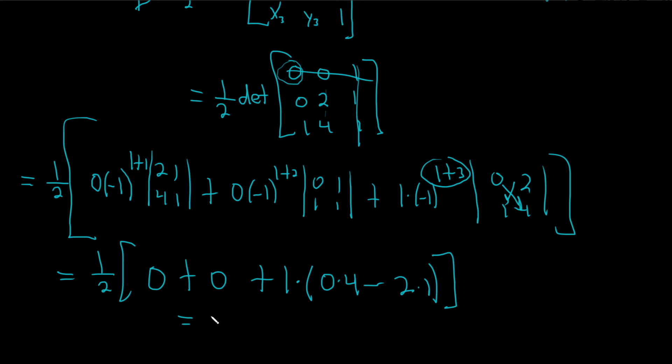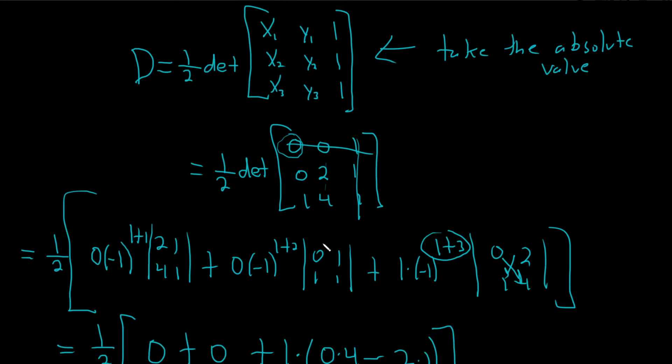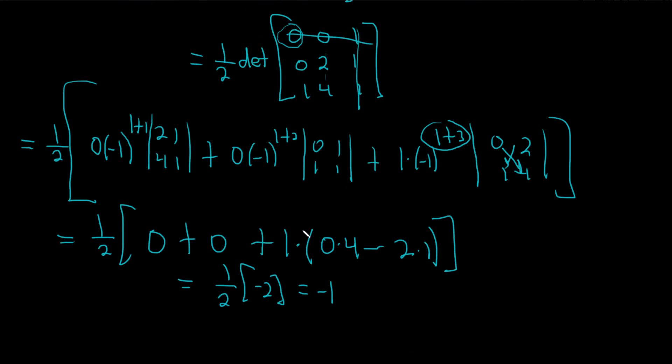Okay, this is equal to, going kind of fast, 1 half, this is 0, so we're just going to get negative 2 here. Oh, this is interesting, so we do get negative 1, so remember at the beginning we said, you have to take the absolute value if you get a negative number, so the final answer would just be 1, right, you just make it positive, so the area is 1.